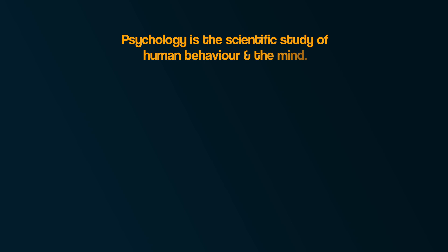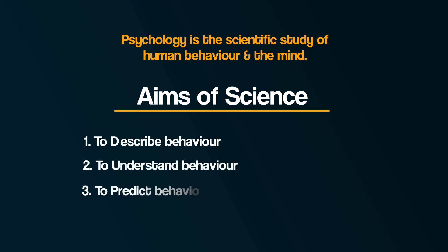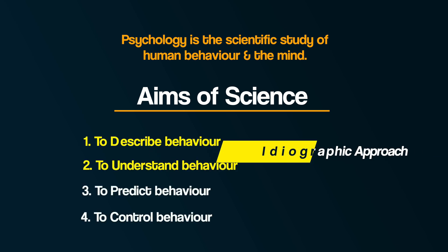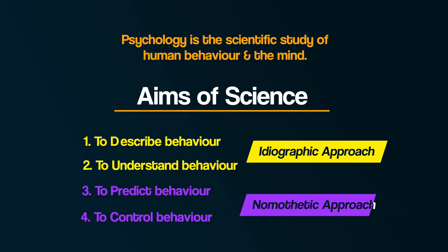In fact, some have pointed out that both ideographic and nomothetic approaches are needed to fulfil the aims of science. If psychology is the scientific study of mind and behaviour, its aims are to describe, understand, predict, and control behaviour. An ideographic approach can achieve description and understanding, whereas a nomothetic approach can achieve prediction and control — complementary rather than contradictory.